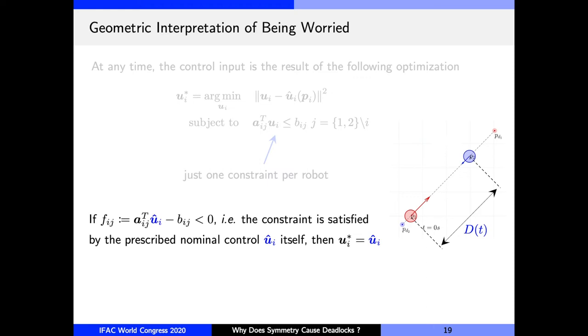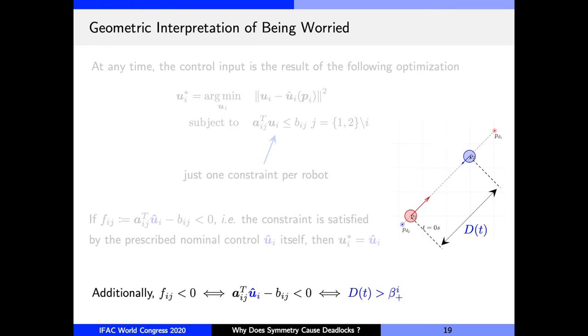So just to recall, at any time, the control input for robot i is obtained from this optimization. For the two robot case, each robot only must avoid collisions with the other robot. So there's just one constraint per ego robot. Now, if it so happens that the prescribed nominal control u_i^cap satisfies this constraint itself, then it is evident that the optimal solution is u_i^cap itself. Right? That's because the optimal value of the objective, in that case, will be zero, and u_i^cap would satisfy the constraint. So the solution will be u_i^cap. Now, as we show in the paper, it turns out that u_i^cap satisfies this constraint, if and only if the distance between the robots is greater than a certain critical distance, called β_i. Each robot i has its unique distance β_i, because the gains of proportional controller, as well as the initial distance of i to its goal, is unique.